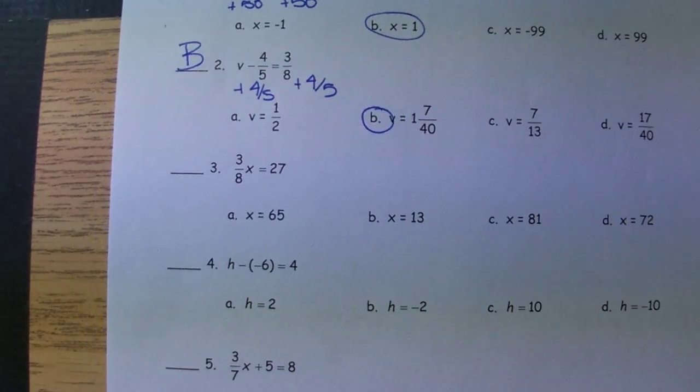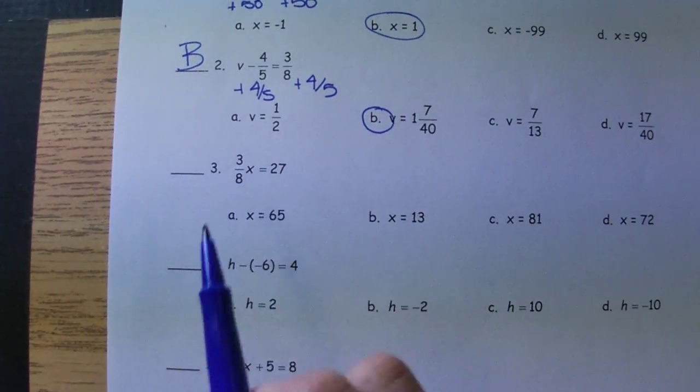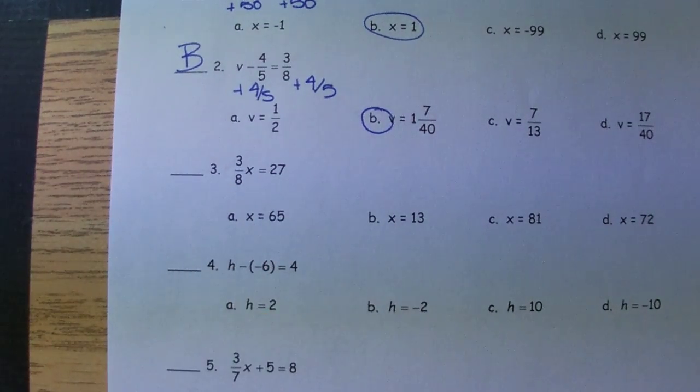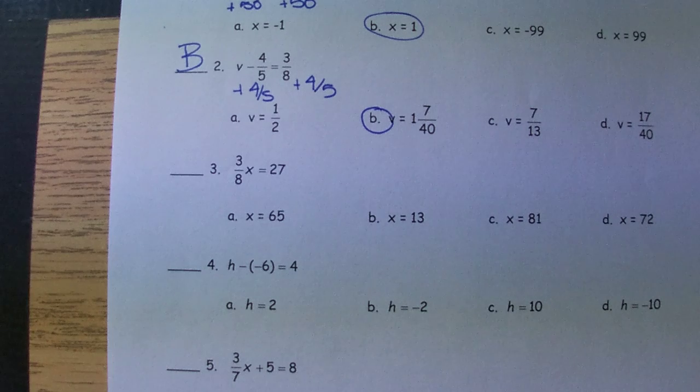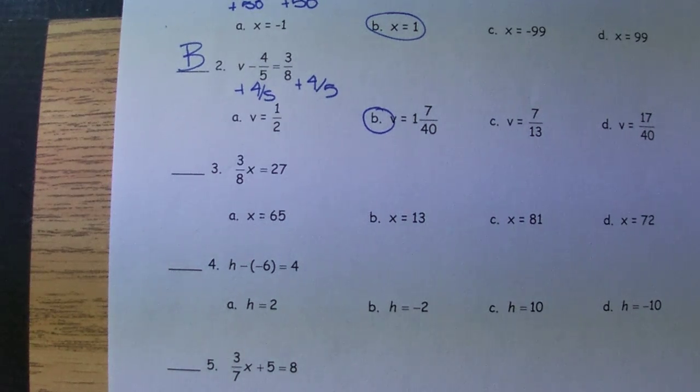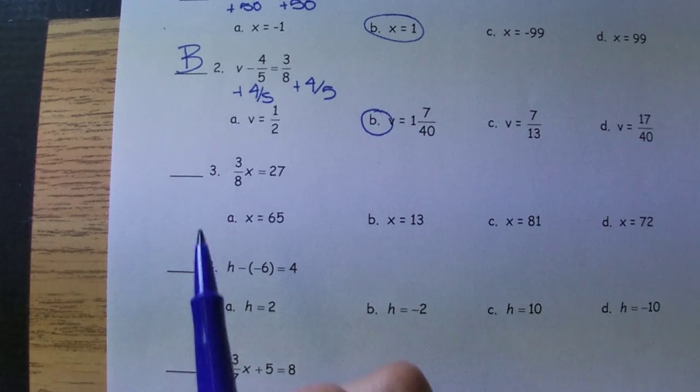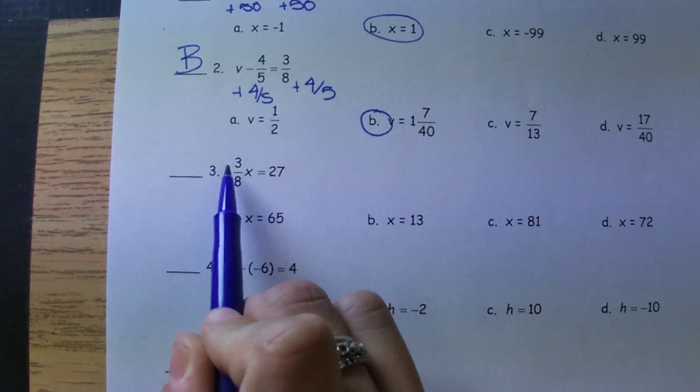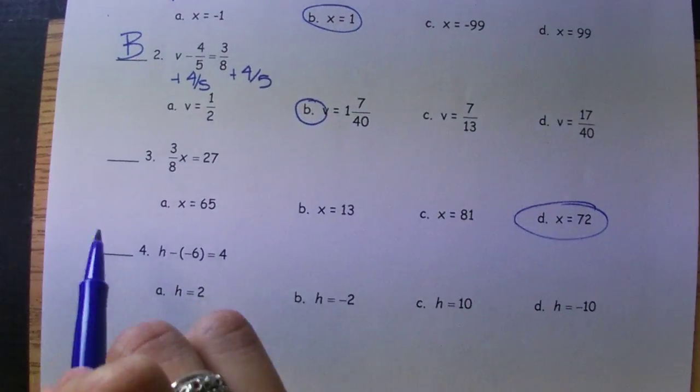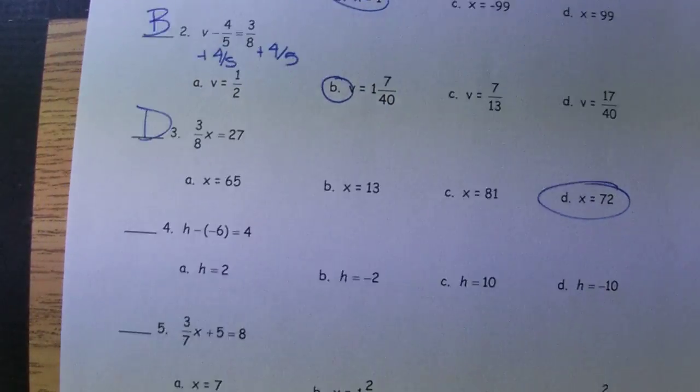Number three, we have a couple options. That three-eighths is being held on by multiplication. We undo multiplication with division, so we can be dividing by three-eighths. But remember, dividing by three-eighths is the same thing as multiplying by the reciprocal. There's also some of you who have been multiplying by 8 and then dividing by 3. Either way, that gives us an answer of 72, which is D.